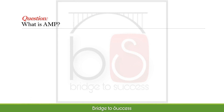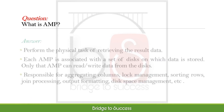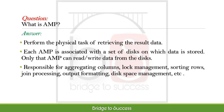What is AMP? AMP stands for Access Module Processors. It performs the physical task of retrieving the result data. Each AMP is associated with a set of disks on which data is stored, and only that AMP can read or write data from those disks. It is responsible for aggregating columns, block management, sorting rows, join processing, output formatting, disk space management, etc.